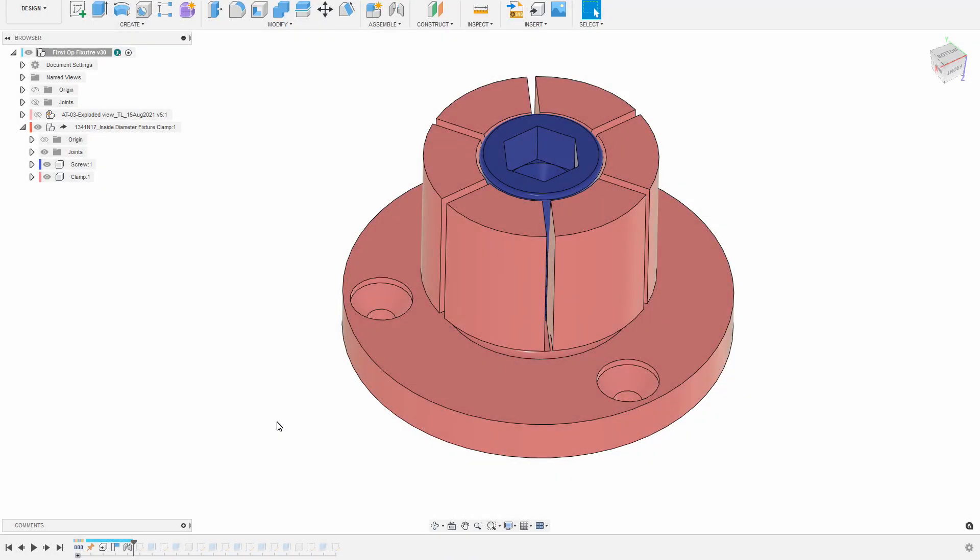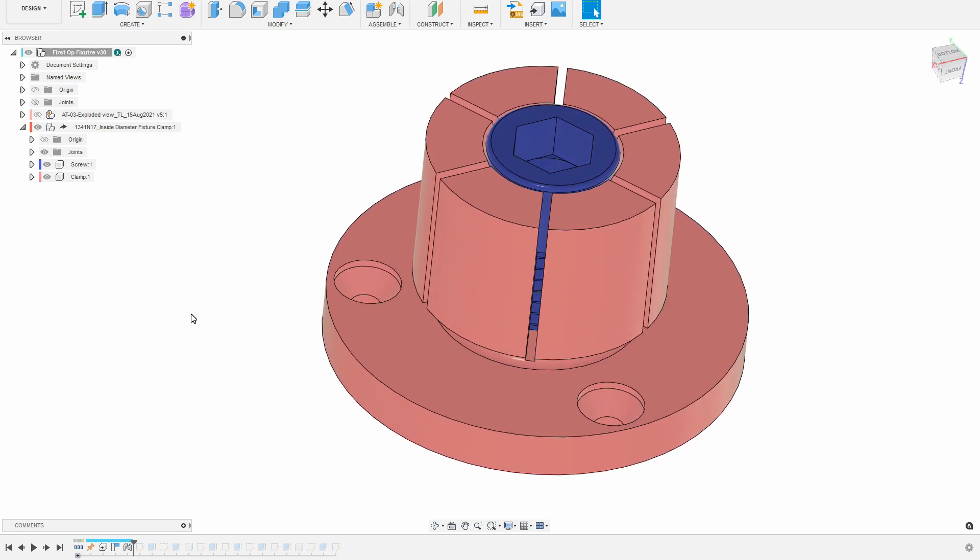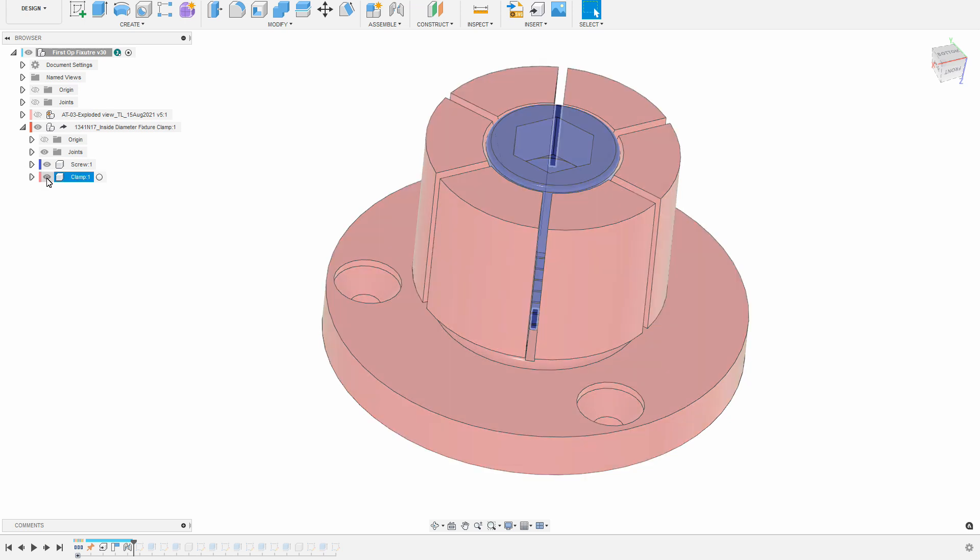Let me head to the computer and show you more about that. I started by downloading the 3D model for this inside diameter clamp, and that makes it a lot easier to create a fixture. This is made out of two different pieces.